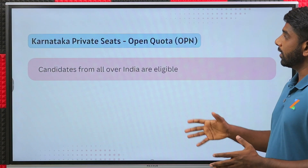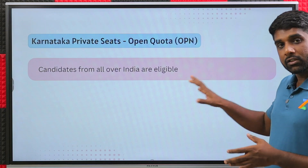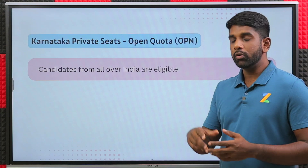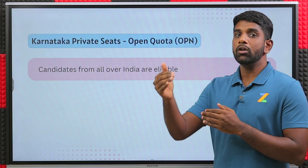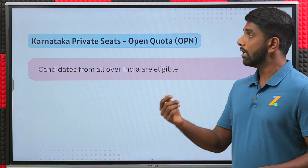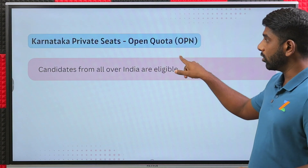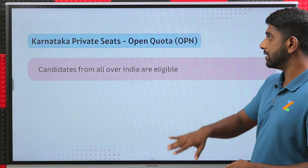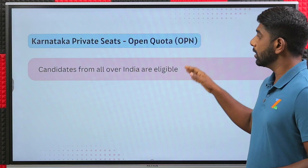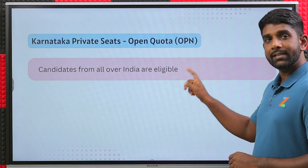Next is the Karnataka private seats open quota. In this open quota, candidates from all over India are eligible. This is the quota which is at a lower fee structure, and candidates mostly from other states will apply for this quota. Unlike the GMP quota which is only for Karnataka candidates, the open quota is for candidates all over India.